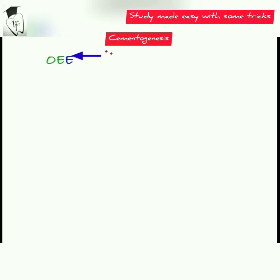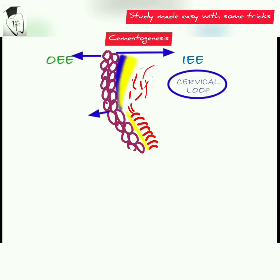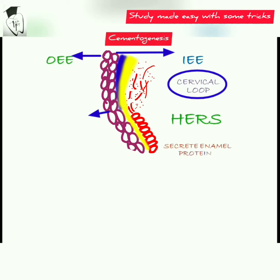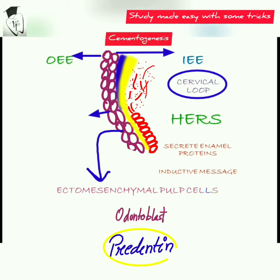First we'll know how the cementoblasts are formed. The outer enamel epithelium and inner enamel epithelium meet to form the cervical loop and extend to form the Hertwig's epithelial root sheath. The Hertwig's epithelial root sheath sends inductive messages to the facing ectomesenchymal pulp cells by secreting some enamel proteins. The cells get differentiated into odontoblasts, which lay down the predentine consisting of the ground substance, cells, and matrix.